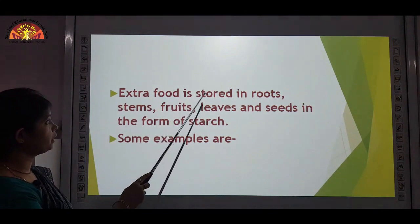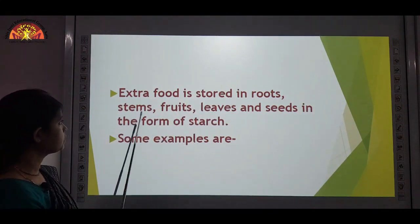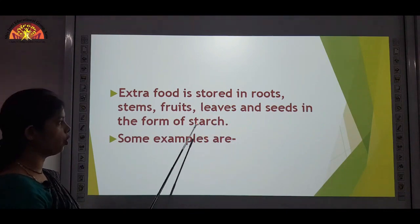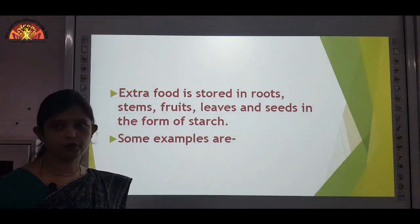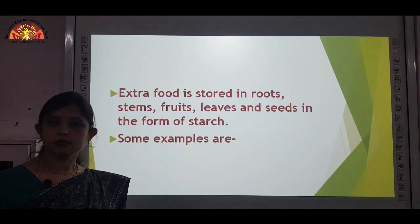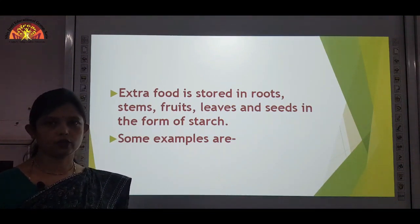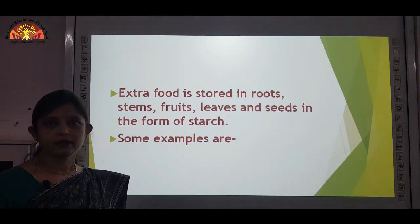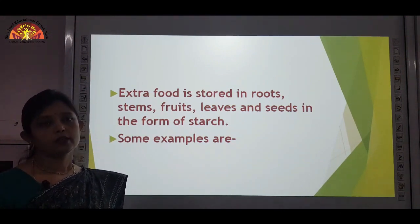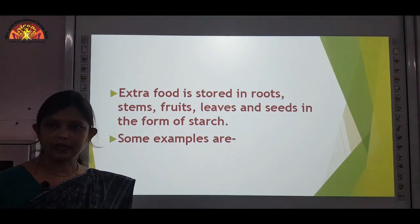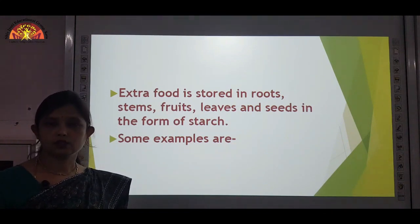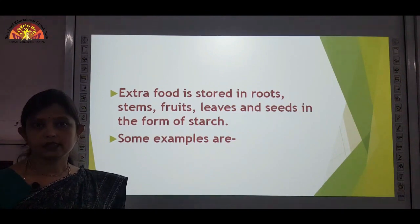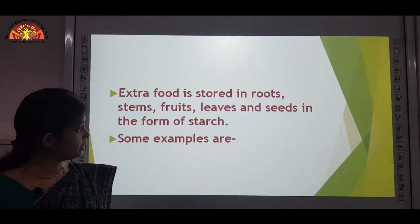Extra food is stored in roots, stems, fruits, leaves and seeds in the form of starch. This extra food is stored in different parts of the plants. You have studied in your previous class also that some plants store their food in leaves, in some it is stored in fruits, in some stem, roots, etc. Now let us see some examples.